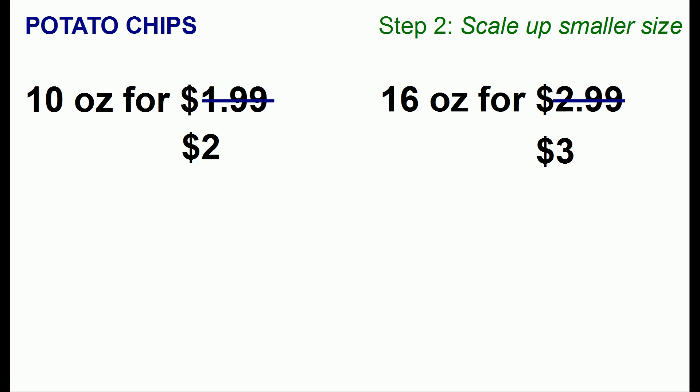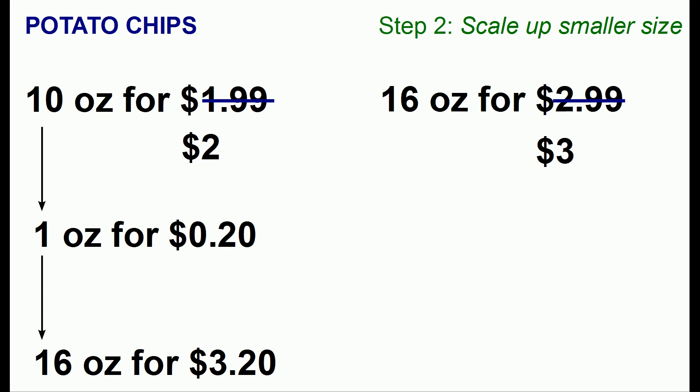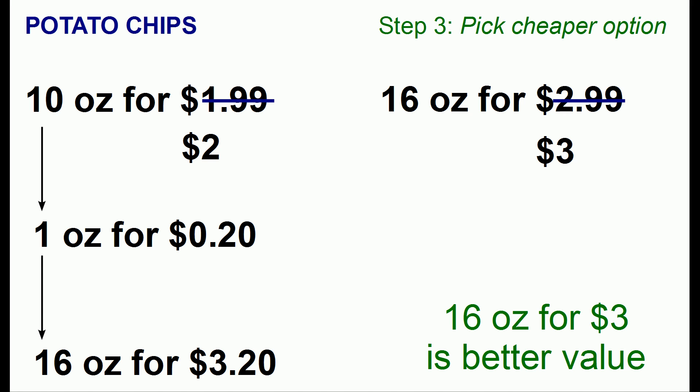What we'll do is figure out the unit cost for the 10-ounce package of potato chips. If 10 ounces cost $2.00, that means every ounce costs 20 cents. Now we'll scale that up to 16 ounces. So buying 10 ounces for $2.00 is basically the same as buying 16 ounces at a rate of $3.20. Now we can compare the two options and conclude that buying the 16-ounce package of potato chips for $3.00 is the better value.